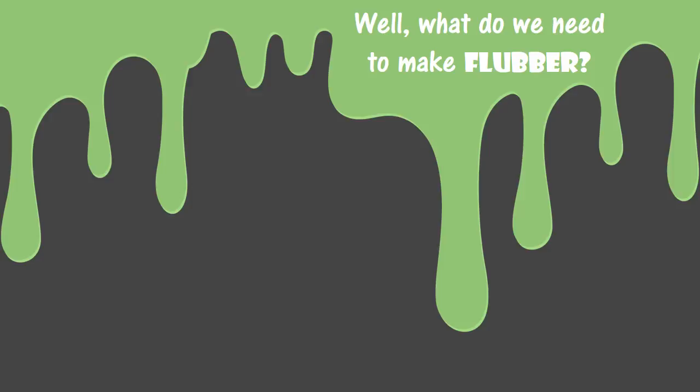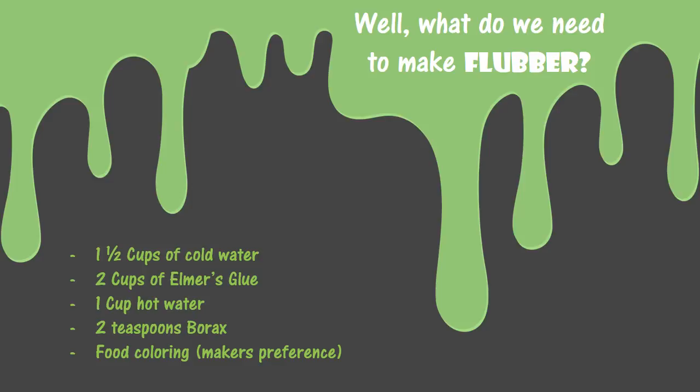So, what are our ingredients for flubber? It's going to be one and a half cups of cold water, two cups of Elmer's glue, one cup of hot water, two teaspoons of borax, and food coloring. You can use any color you want. We used green because the flubber in the movie is green. My daughter really wanted pink flubber, but I'm a purist, so I crushed her dreams of pink flubber.